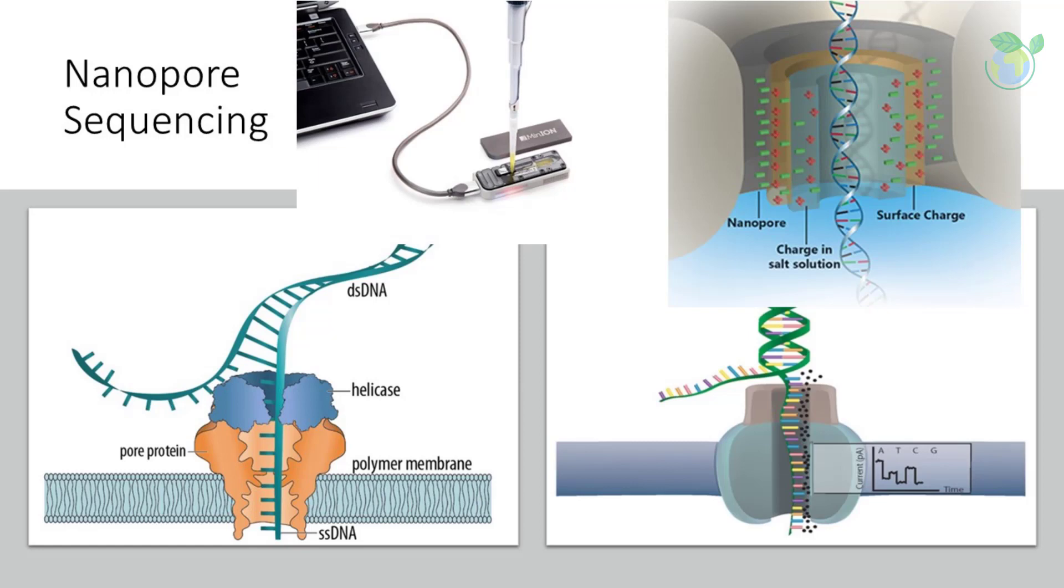Nanopore sequencing technology uses flow cells that contain an array of tiny holes, called nanopores, embedded in an electro-resistant membrane. The flow cell allows for massive parallel sequencing. The flow cell is made of an electrical-resistant membrane that contains thousands of tiny pores, each with a diameter of 1 nanometer. Each nanopore corresponds to its own electrode connected to a channel and sensor chip, which measures the electric current flowing through the nanopore.